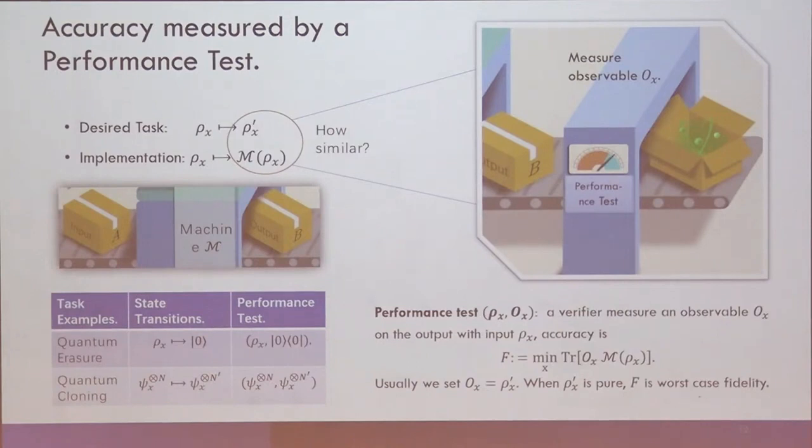Then what we do is we design operational task of quantifying the performance of the real machine. So we measure observables. We call it performance test. For any given input state, we can define an associated observable. And then we measure it. The expectation value will tell us the performance. In the extreme case, let's consider O_ax is a projector. For example, if you have an input state to a pure state, then O_ax is just a projector onto that pure state. And in this case, it's just a fidelity. And this corresponds to worst case fidelity. But in general, we can design an arbitrary observable for doing this.